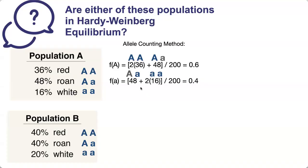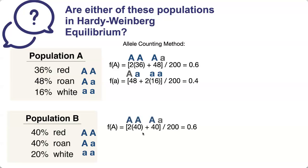We used 48 just once because it comes from the heterozygote — there's only one copy of the little a. For 16, we need it twice, so it's 2 times 16 in this equation because there are two copies of the little a in the homozygote. For population B, we follow the exact same steps and solve for the allele frequencies. You can see right away these two populations have the same allele frequencies but different genotype frequencies.